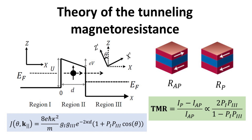Magnetic tunnel junctions are devices made from two magnetic layers separated by a thin insulating spacer. In this video we are going to discuss the basic theory of the tunneling magnetoresistance effect and derive two concise results. First, we derive the current through the tunneling structure and its dependence on the relative orientation of the two magnetizations. Then, in the limit of an opaque tunneling barrier, we show that the TMR is simply related to the spin polarizations of the two ferromagnetic contacts, P1 and P3.